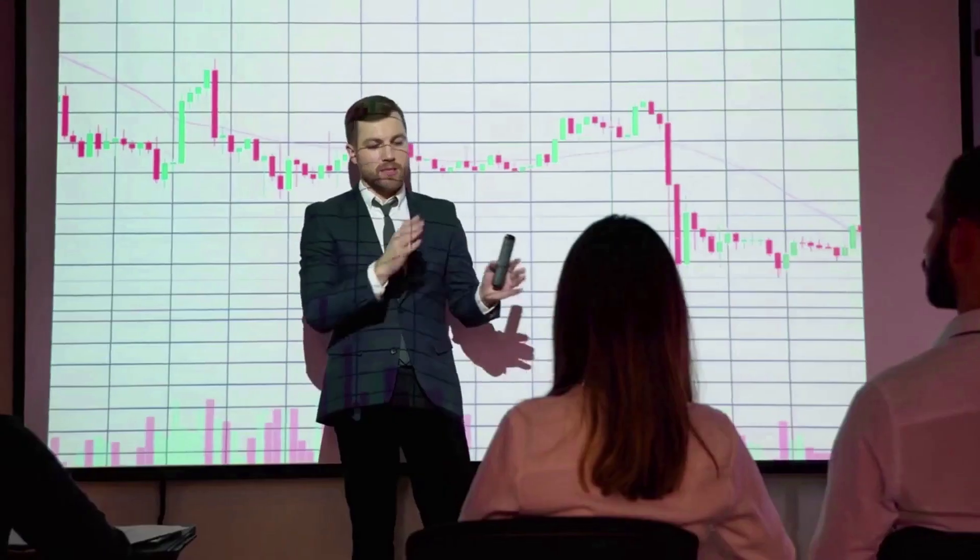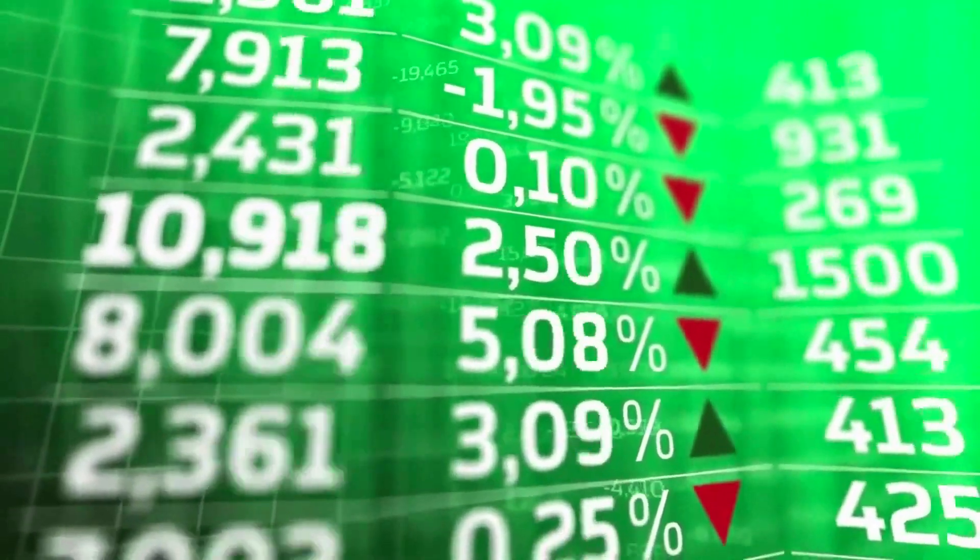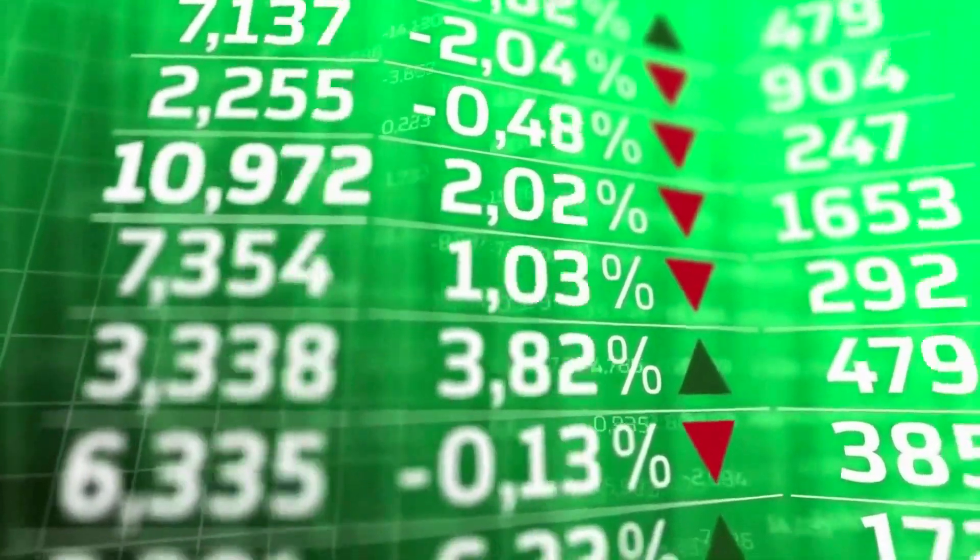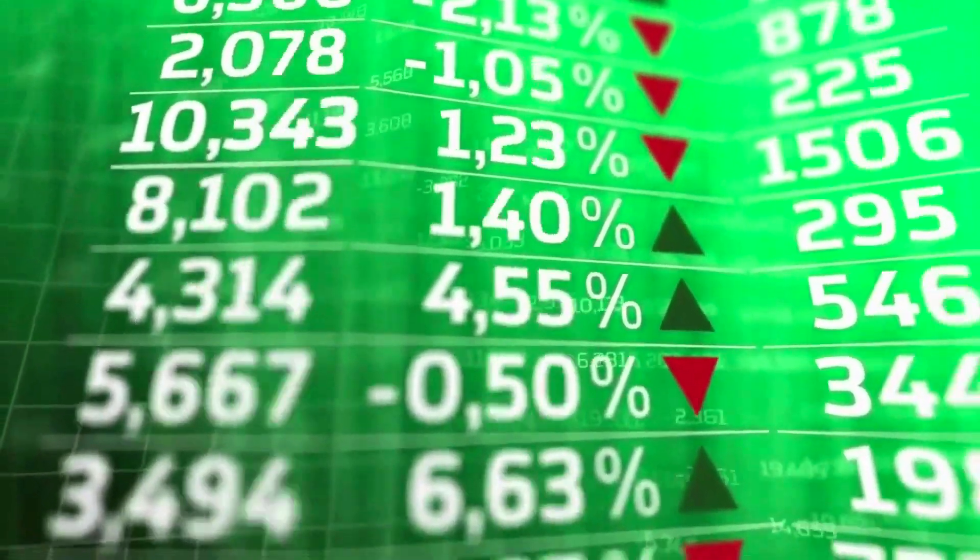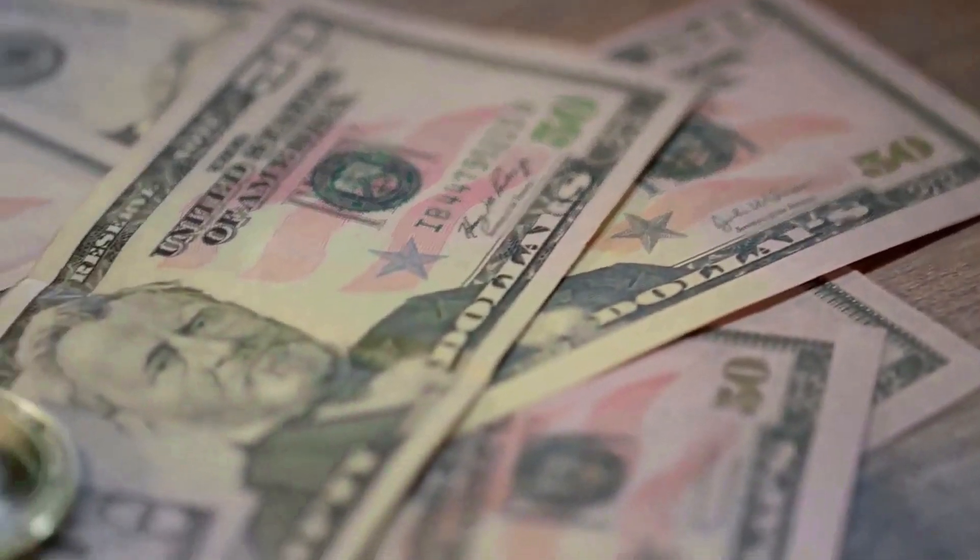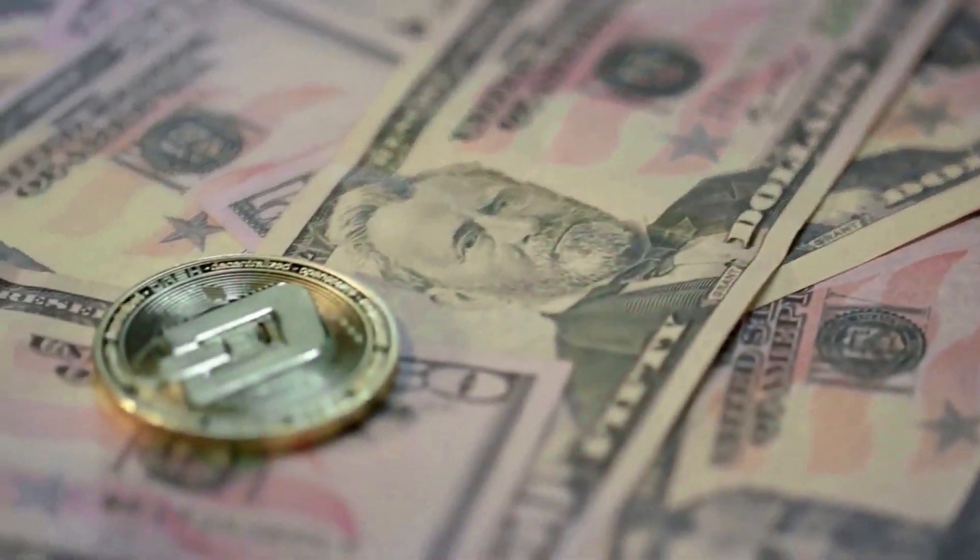However, if the RSI maintains above 50, probabilities favor the upside. This is further supported by the Awesome Oscillator (AO), which is in positive territory, indicating bulls have the upper hand.